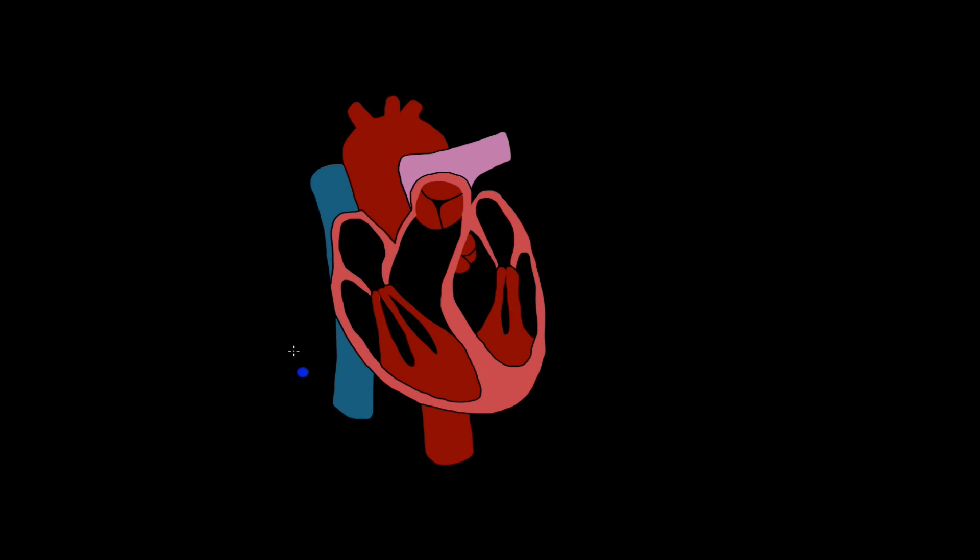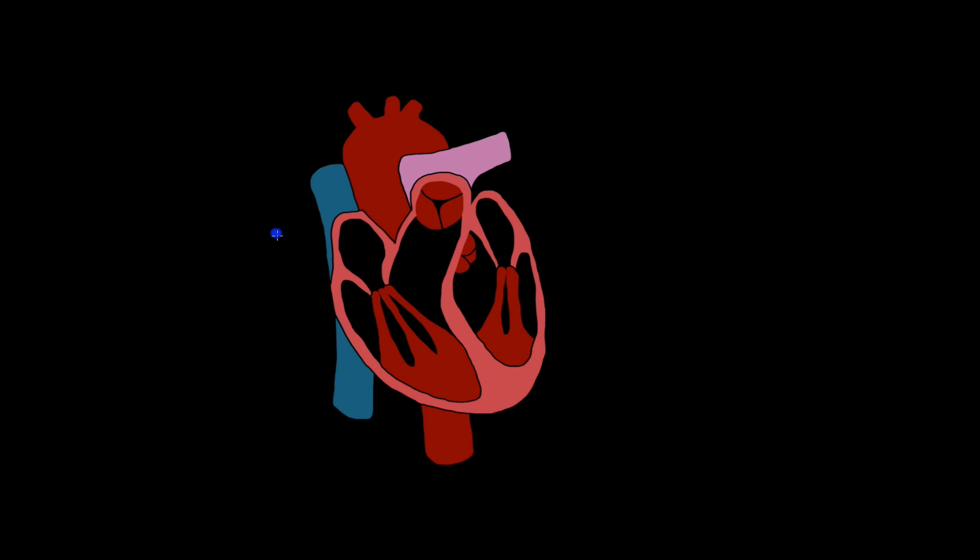So before we talk about it, let's run through the heart for a second. Let's run through the blood flow of the heart. So we know that we start here from the superior vena cava and the inferior vena cava into the right atrium. And then from the right atrium, we're going to pass through the tricuspid valve into the right ventricle.